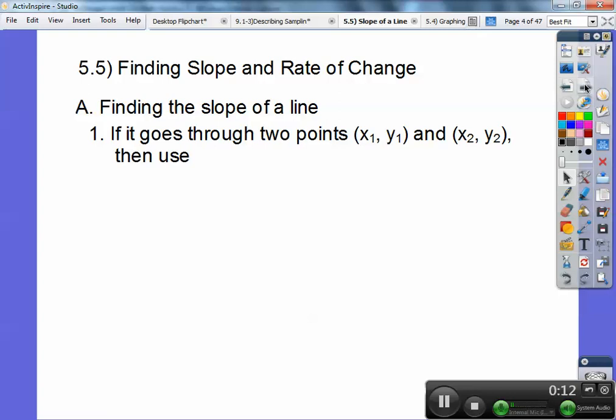Finding the slope of a line. Section A, number one: if it goes through two points (x₁, y₁) and (x₂, y₂), then please use this formula. This is the easiest way. The y's go on top, so subtract the y's on top, subtract the x's on the bottom. You have to go in the same order: y₂ minus y₁ over x₂ minus x₁.